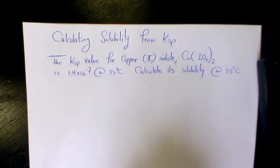What's up guys, this is Massey. Welcome to another video. In this video I want to show you how to find out the solubility from Ksp. The Ksp value for copper(II) iodate, Cu(IO3)2, is 1.4×10^-7 at 25°C. Calculate its solubility at 25 degrees.